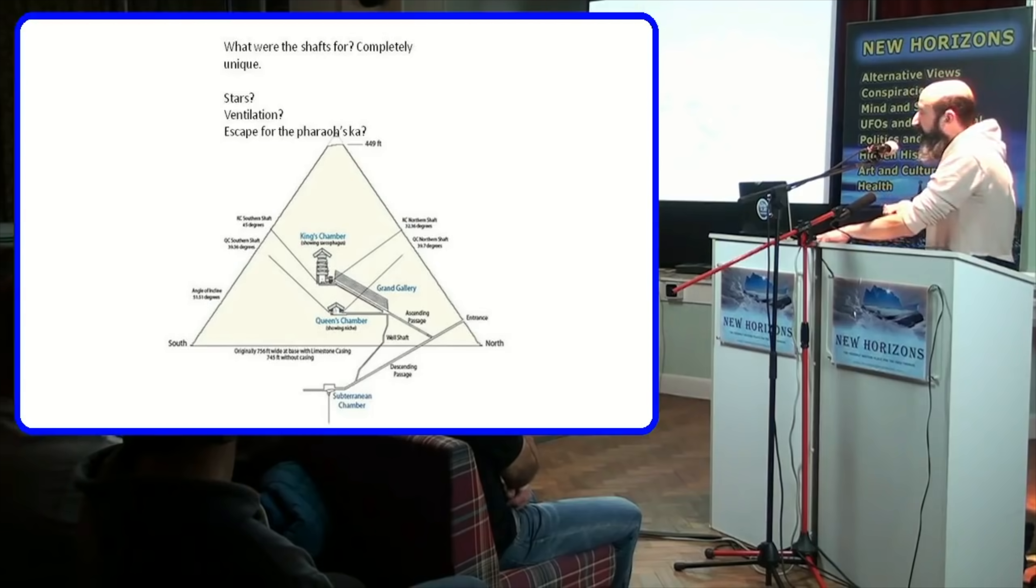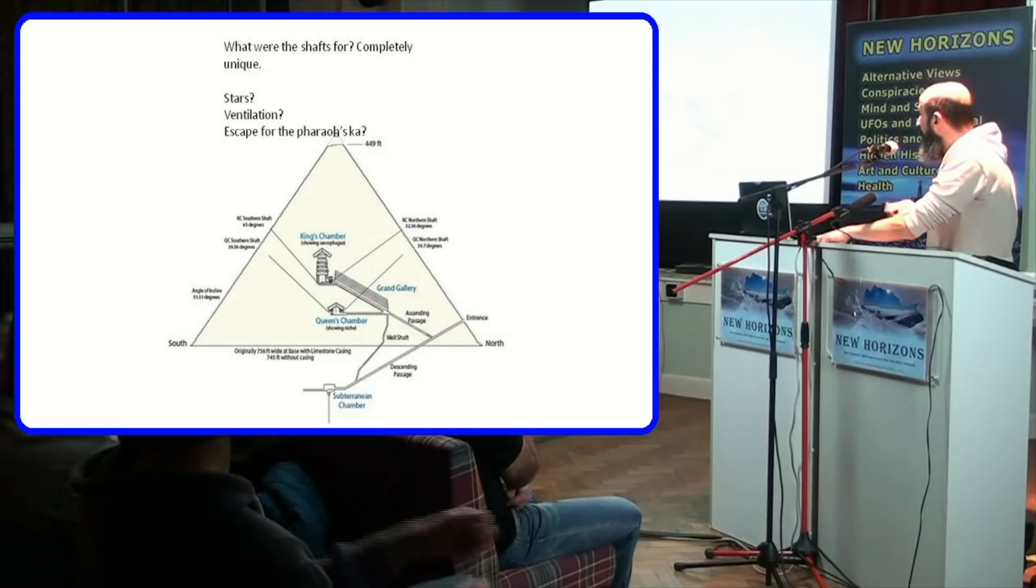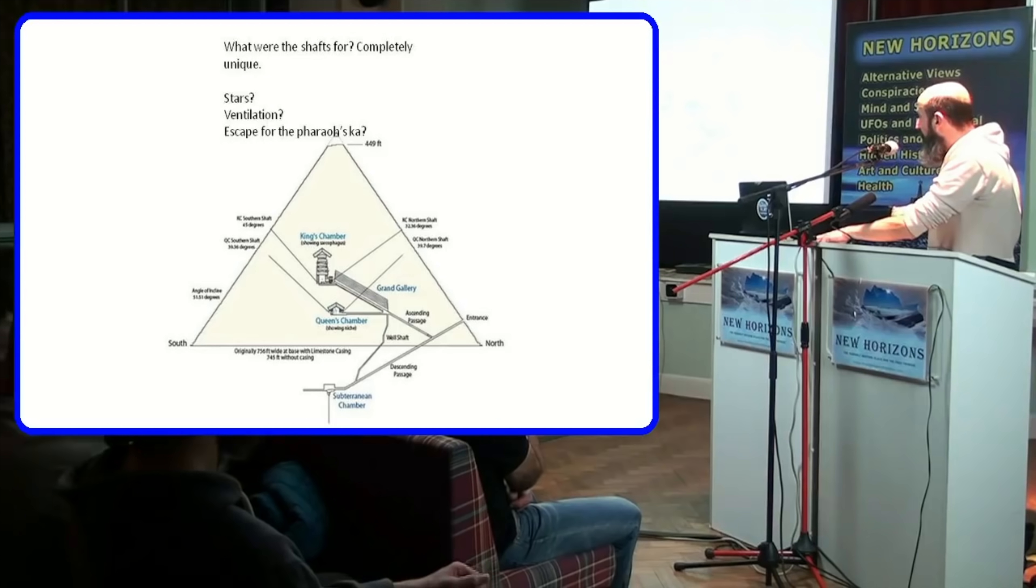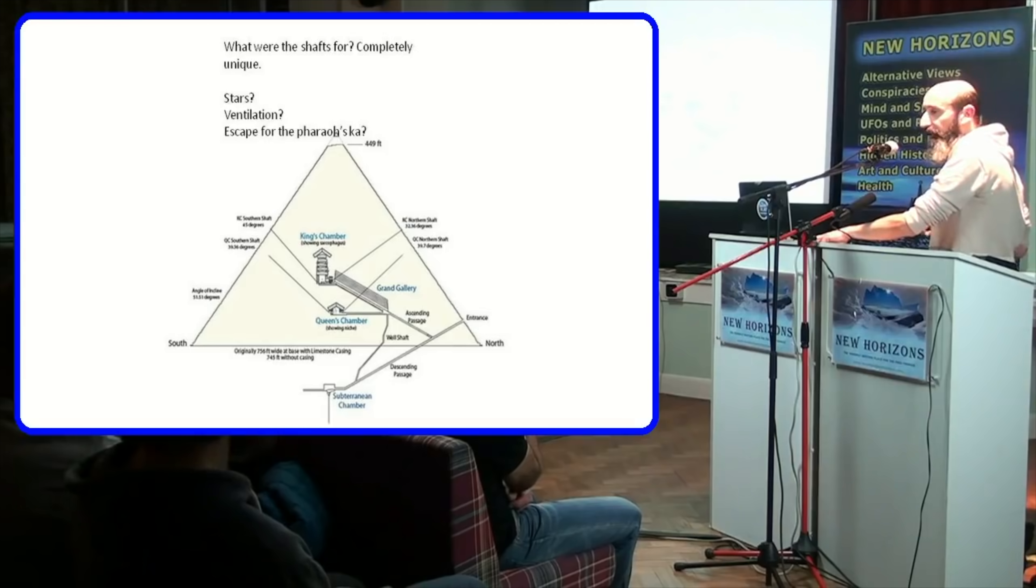The king's chamber shafts reach the outside, or you'd assume they do with no casing stones. But the queen's chamber shafts don't reach the outside and they were both sealed until they were discovered in the late 19th century by British engineer Wayman Dixon.